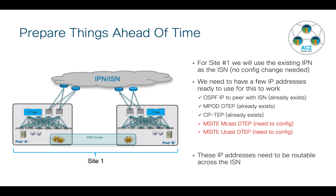Looking at site number one, the good news is we can use the existing IPN as our ISN - we don't have to change any of the multipod configuration for multi-site to work. We need a few IP addresses ready ahead of time. Some already exist and are used by multipod: primarily the connection between the spines and the IPN running OSPF, the multipod data plane TEP, and the control plane TEP. For multi-site we need to add a multicast TEP and a multi-site unicast TEP.